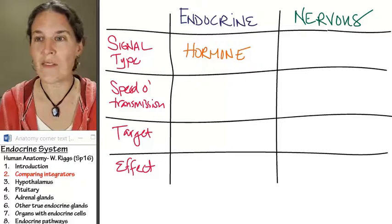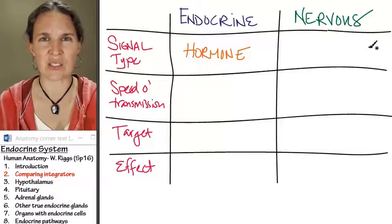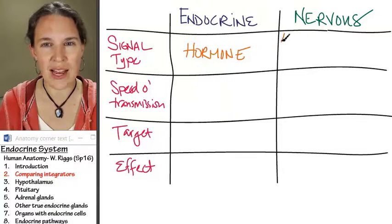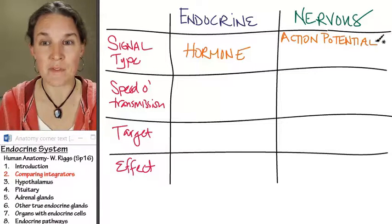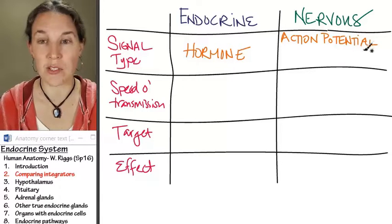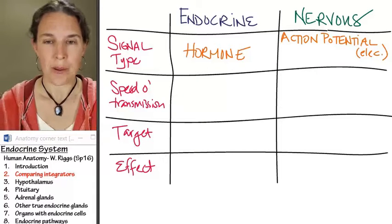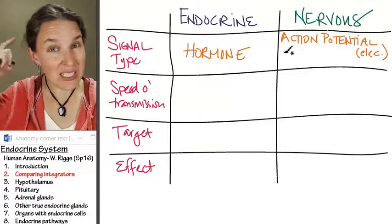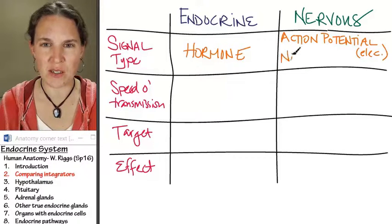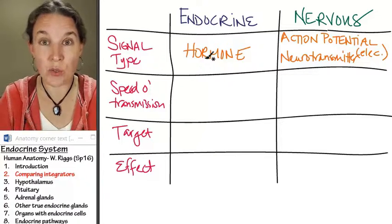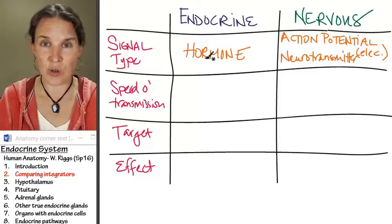The nervous system has actually two flavors of signal. We have an electrical signal, which is called the action potential — and you will learn all about the action potential in physiology. The nervous system also has a chemical signal involved, and that's a neurotransmitter. Neurotransmitters are chemicals that are released onto the next cell in line in a neural communication pathway.